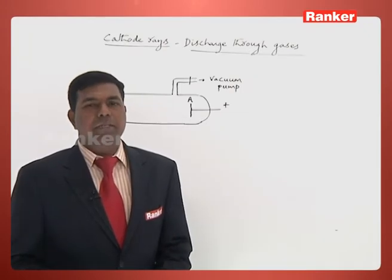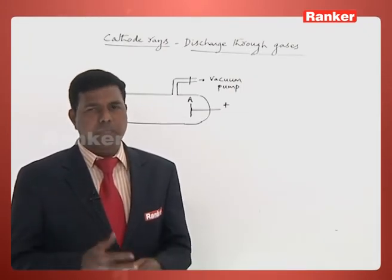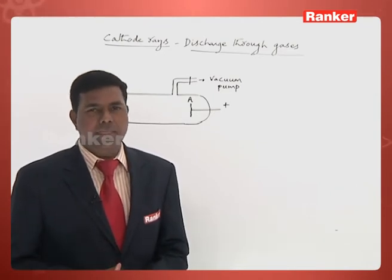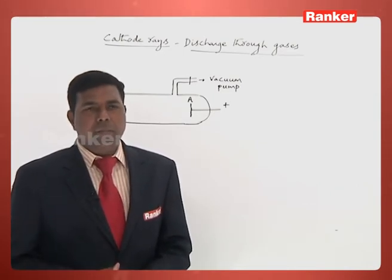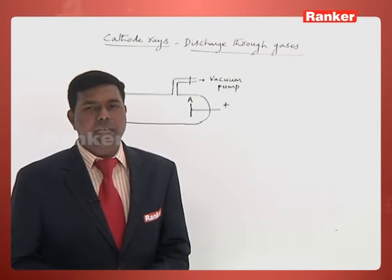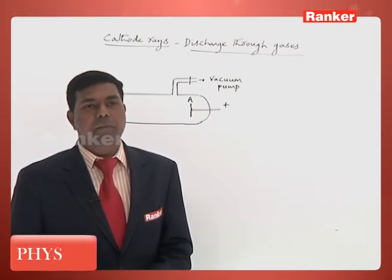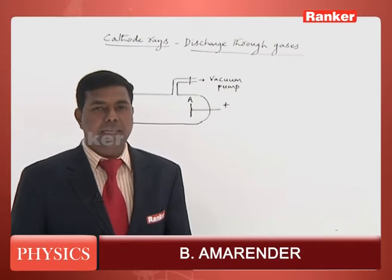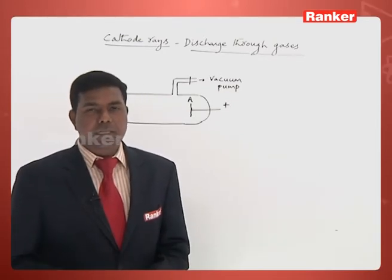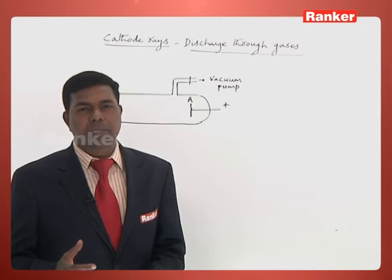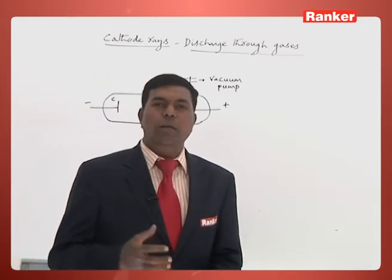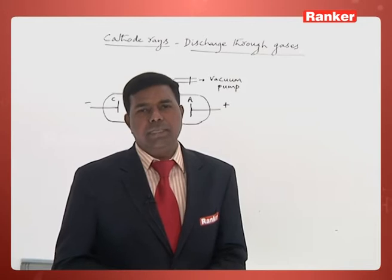Under normal conditions, gases do not discharge — that is, electric current does not pass through gases. But when the pressure is very low and the applied potential is very large, gases conduct electric current. The discharge of gases can be observed using a glass tube which we call a discharge tube.